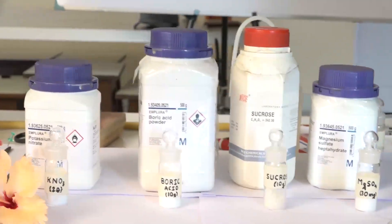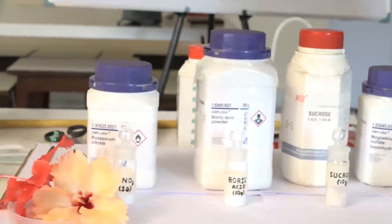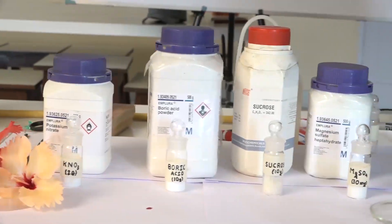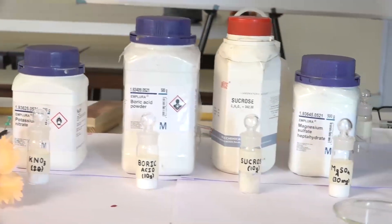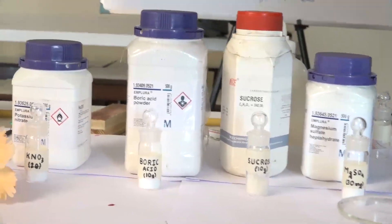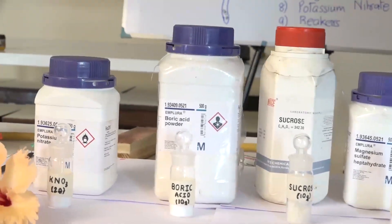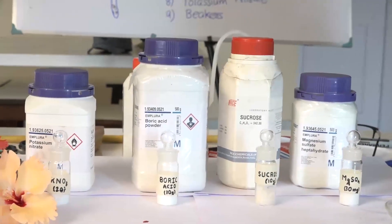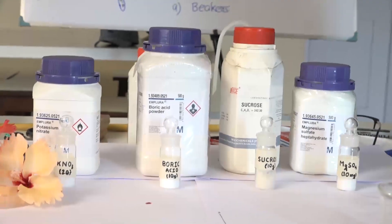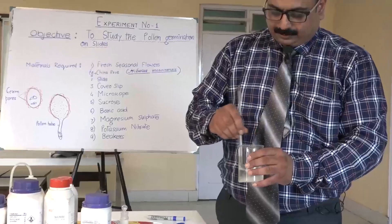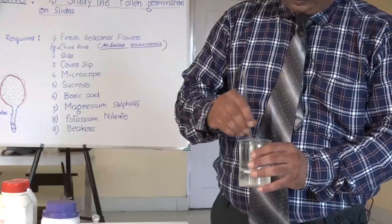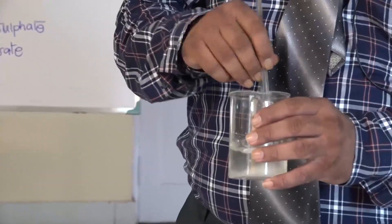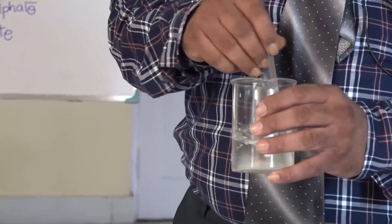Students, first we have to make a solution of sucrose, boric acid, potassium nitrate, and magnesium sulphate. We have to stir it until it dissolves. It will take quite a few minutes — may take five or six minutes.